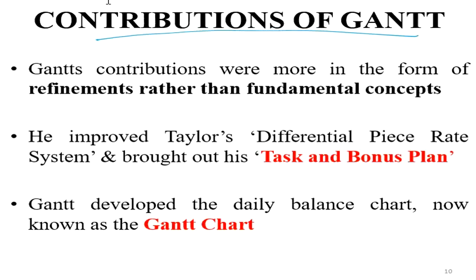What Henry Gantt did was some rectification in the fundamental concepts. He improved Taylor's differential piece rate system and brought out his task and bonus plan.